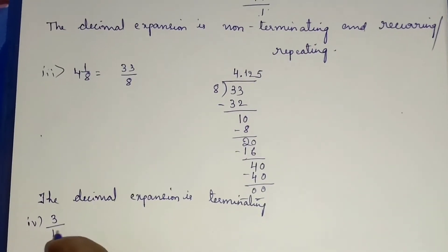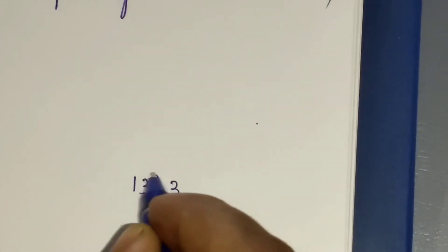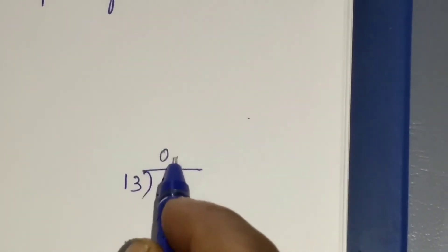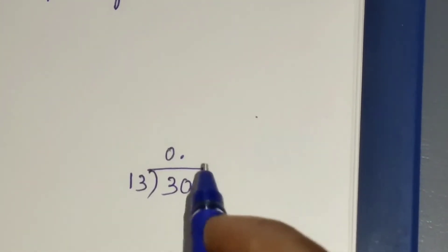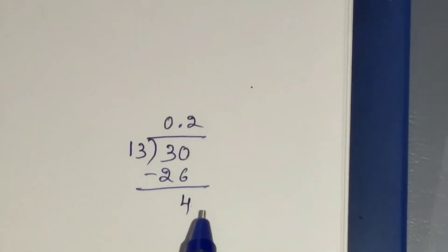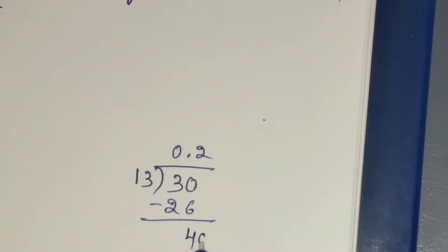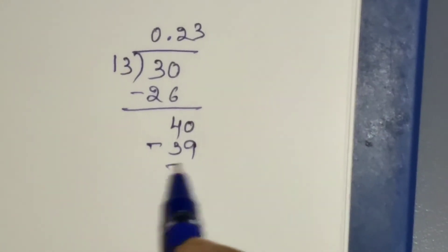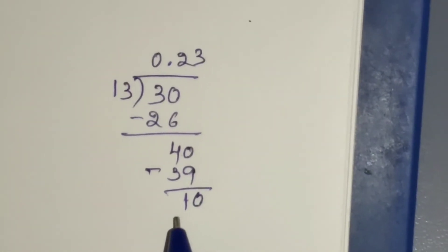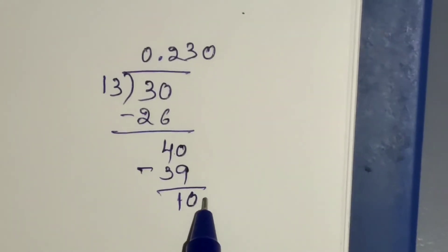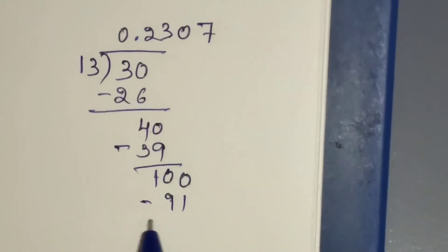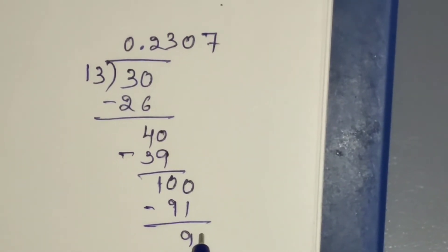Question number 4 is 3 by 13. Start the division process: 3 divided by 13 — since 13 has 2 digits and 3 has only 1 digit, it is not possible. Put 0 point and take 0, making it 30. 13 twos are 26; subtract to get 4. Take 0: 13 threes are 39; subtract to get 1. Take 0 — not divisible again, so add 0 in the quotient and take one more 0, making it 100. 13 sevens are 91; subtract to get 9.